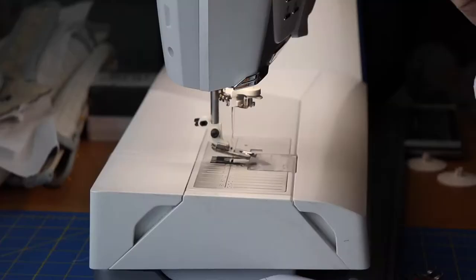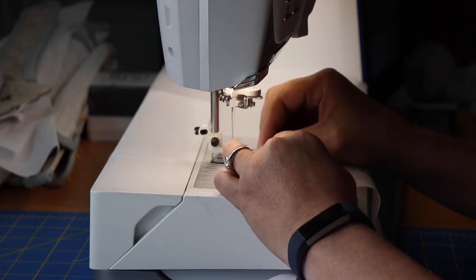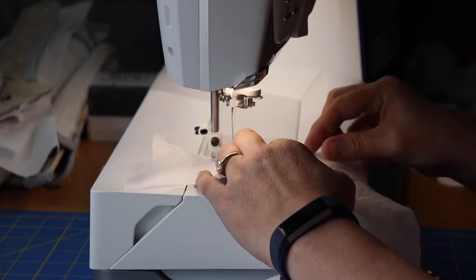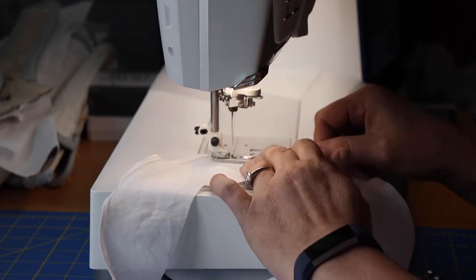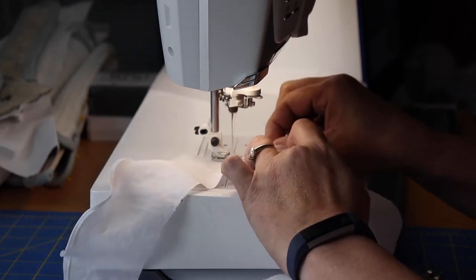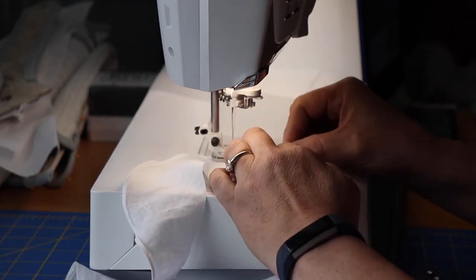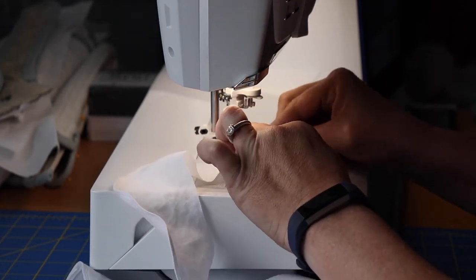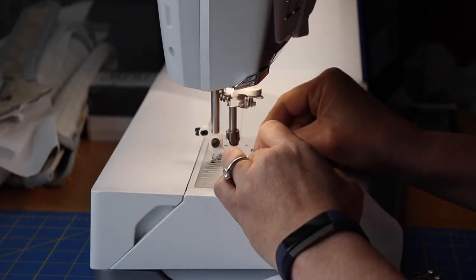The first step is to hem the facings, and they recommend using a serger, but I'm going to do a rolled hem on my machine. As I said, the first step of this pattern is to finish the edges of the facing. Rather than use my serger, as recommended in the pattern, I elected to use my machine and do a rolled hem. I love my rolled hem foot. It works really well. Sometimes it takes a little bit of fabric manipulation, but there you go, it's a beautiful hem. So one facing down and here's the second facing.